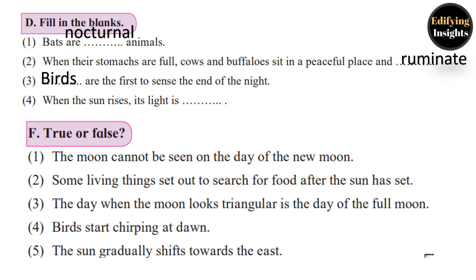True or False: 1) The moon cannot be seen on the day of the new moon — True. 2) Some living things set out to search for food after the sun has set — True. 3) The day when the moon looks triangular is the day of the full moon — False. 4) Birds start chirping at dawn — True. 5) The sun gradually shifts towards the east — False.